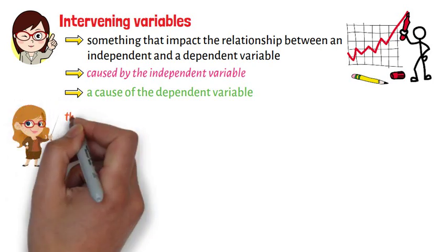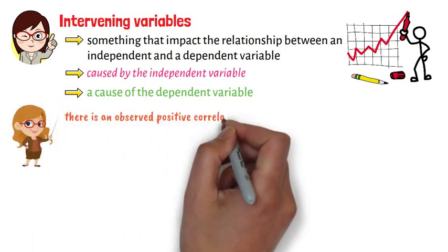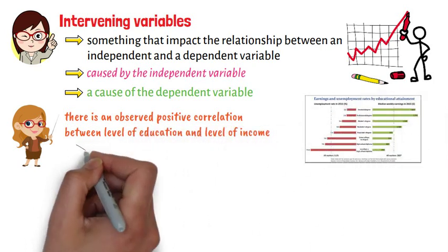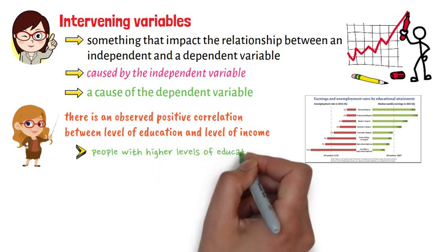For example, there is an observed positive correlation between level of education and level of income, such that people with higher levels of education tend to earn higher levels of income.